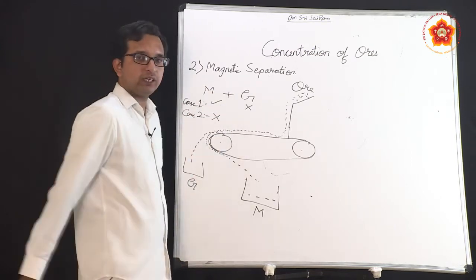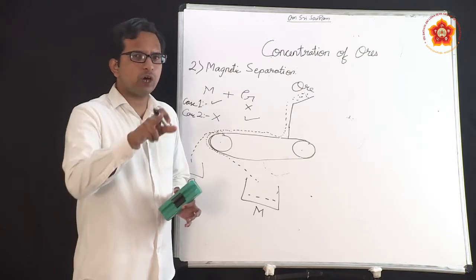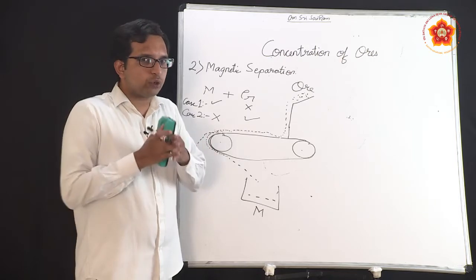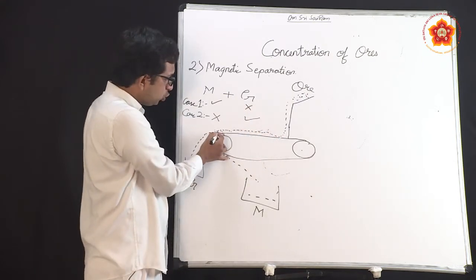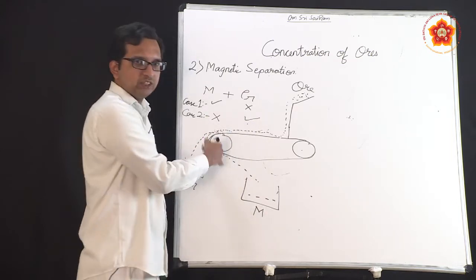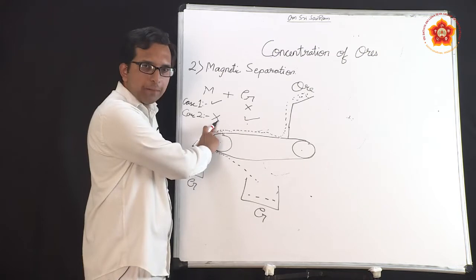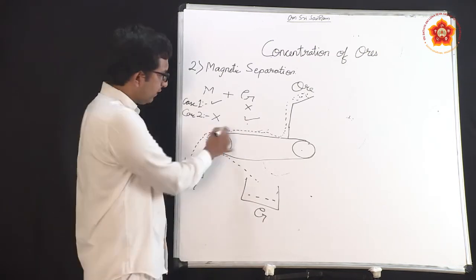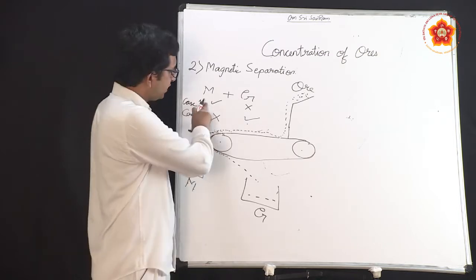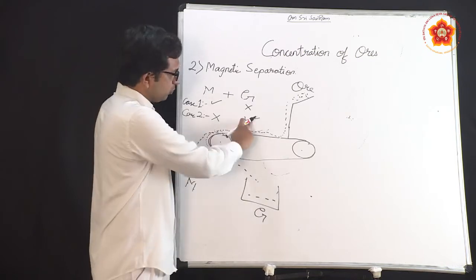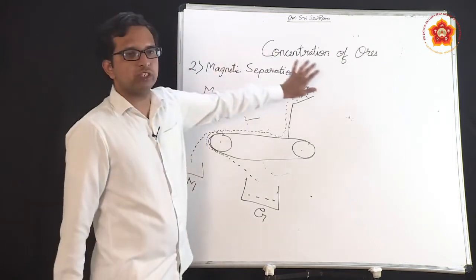Case 2: metal is non-magnetic and gangue is magnetic. This is used for extracting copper, since iron (which accompanies copper in the earth's crust) is magnetic. The ore travels on the conveyor belt — when it nears the wheel, the magnetic gangue is attracted and collected on one side, while the non-magnetic metal falls off and is collected on the other side.